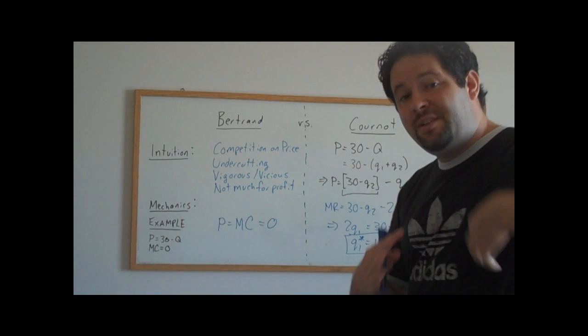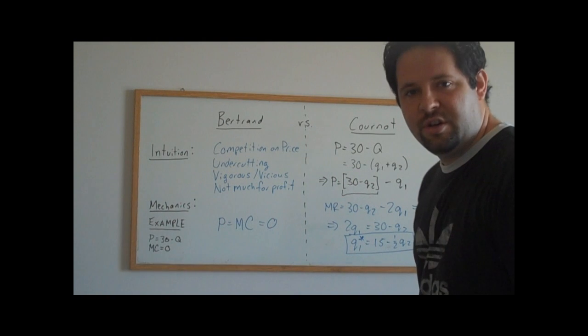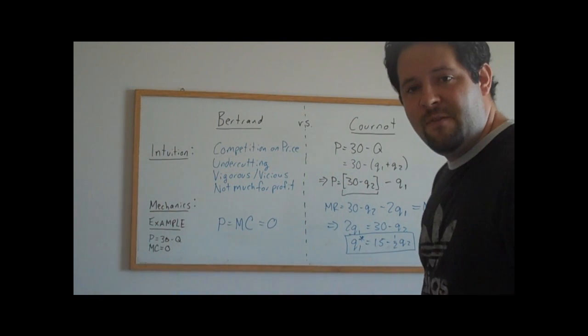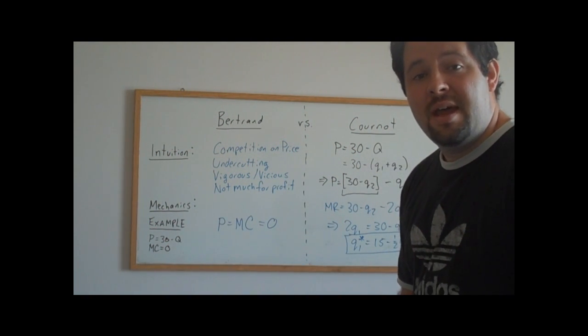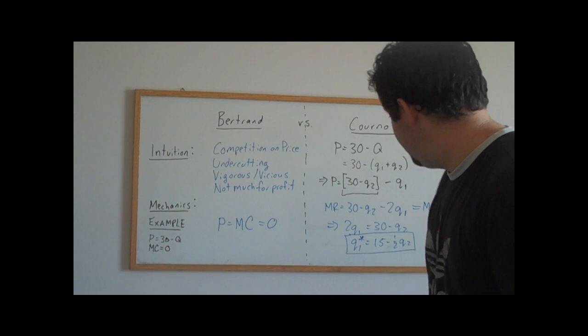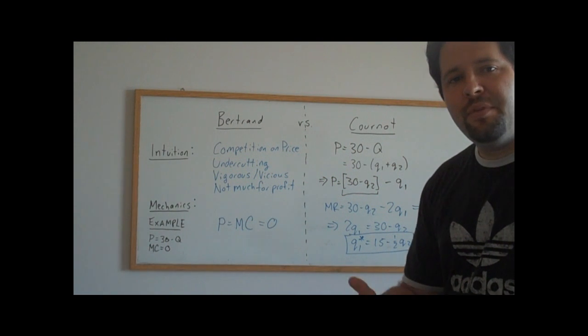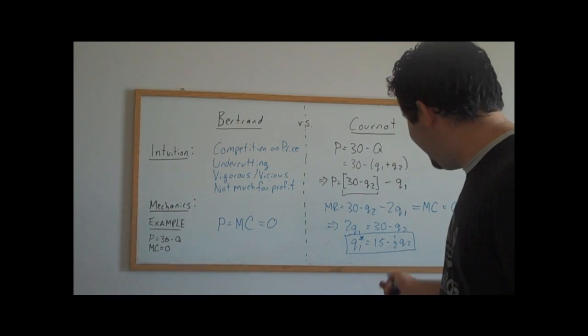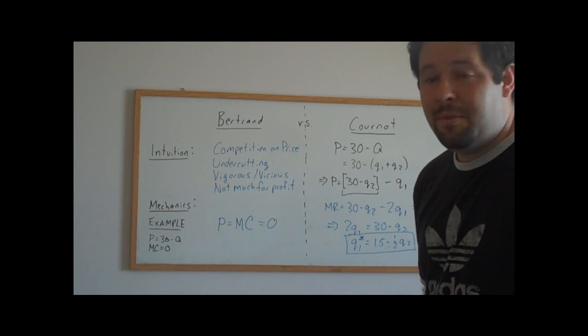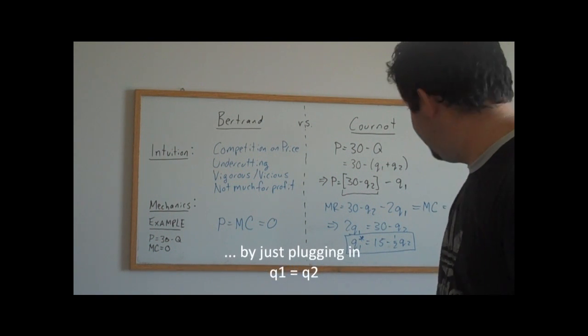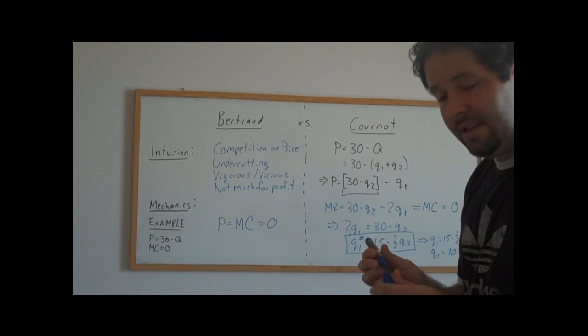So what we can do is we can do a similar exercise for firm two. We would get a symmetric equation here where this would be Q2 star equals 15 minus 1 half Q1 because everything is symmetric in this example. And then if we want to solve for the quantities, we would just have this equation and the one that we got for firm two, and we would solve those two equations and two unknowns. Because it's symmetric, Q1 star and Q2 are going to be the same. And so we could use some symmetry in this to actually solve what the ultimate answer is going to be. Q1 equals 10 in this example.